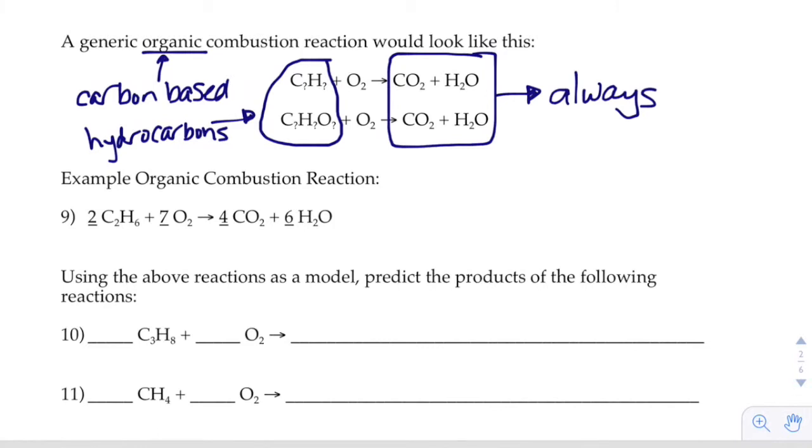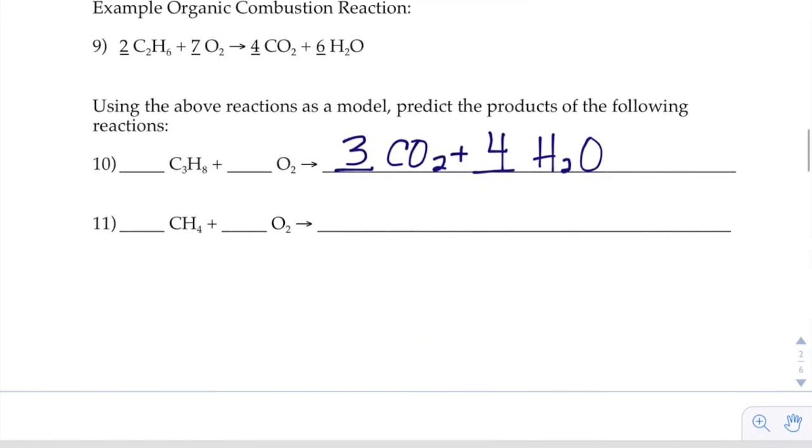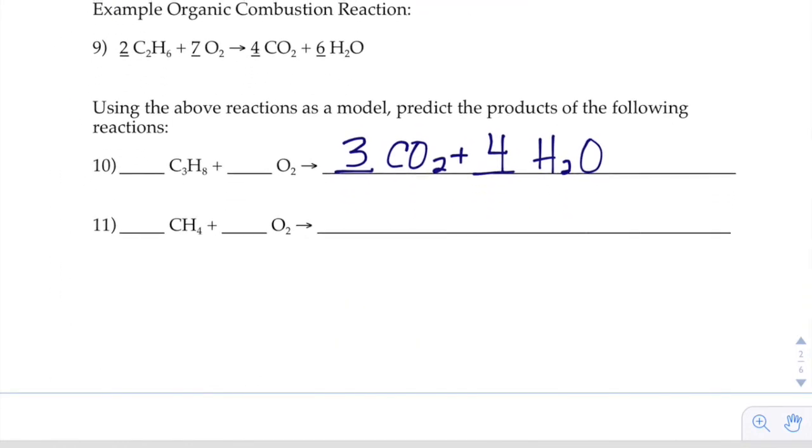And the only thing that you have to really do is balance. So we'd say, okay, CO2 plus water. And we'd have to fix our carbons, fix our hydrogens. And then we've got 10 oxygens on the right, 6 plus 4. So we need 10 oxygens on the left. Okay.